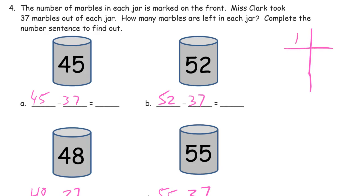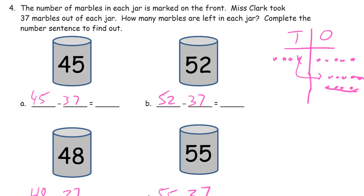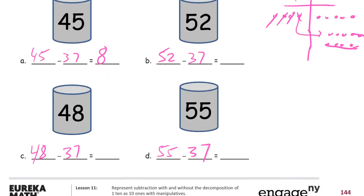So if we do 45 minus 37 on the chart — 4 tens and 5 ones — we take away 37. We don't have 7 ones, so we unbundle a 10, getting 10 extra ones. We cross out 7 ones, leaving 3. Then we cross out 3 tens — we don't have any tens left. But we do have 8 ones. So 45 minus 37 is 8.